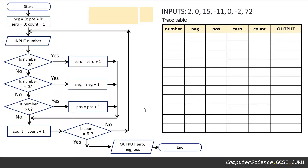So let's now practice a dry run of this algorithm. We have it represented here as a flowchart on the left hand side. On the right hand side we have our trace table.